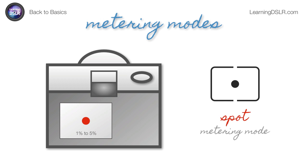The next mode is much more precise: spot metering, which uses only one to five percent of the center of the viewfinder. This can be very handy in really bright backlit scenes. You might put on spot metering, press the shutter halfway or use your exposure lock, meter on someone's face, then recompose. Regardless of how much light is washing in from a backlit scene — perhaps sunlight over someone's shoulder — you'll get a good exposure because you've told the camera exactly what matters in the scene.